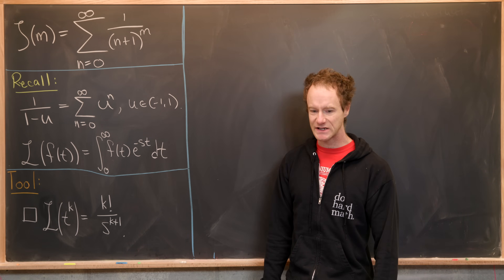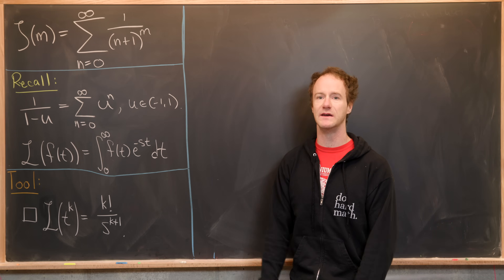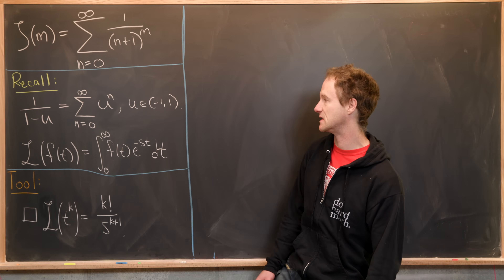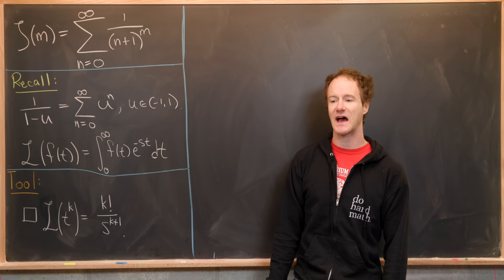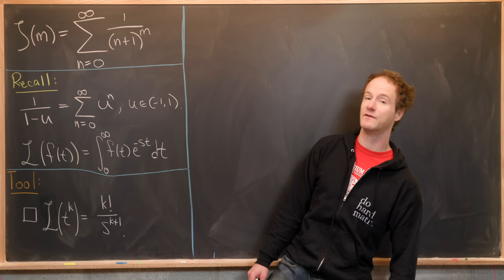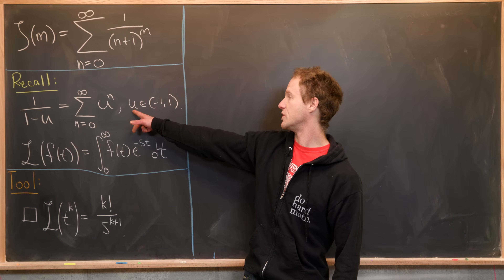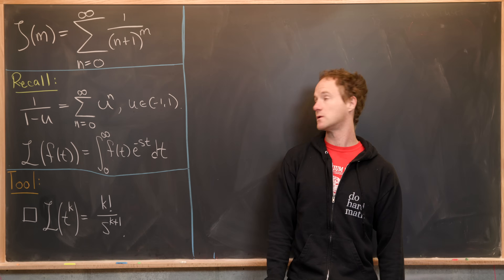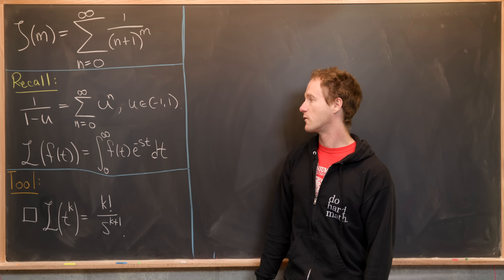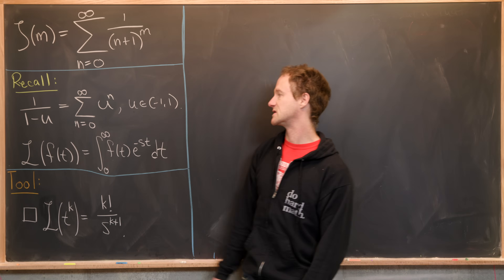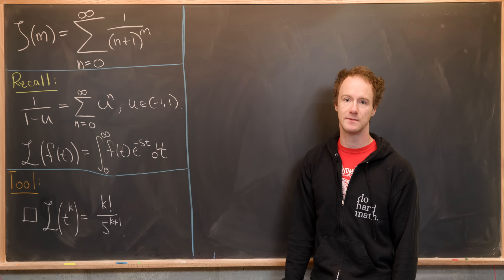We're going to take two things as facts and prove one little limit as a tool. The first fact is the sum of a geometric series: for u on the open interval from minus 1 to 1, we have 1 over 1 minus u equals the sum as n goes from 0 to infinity of u to the n.